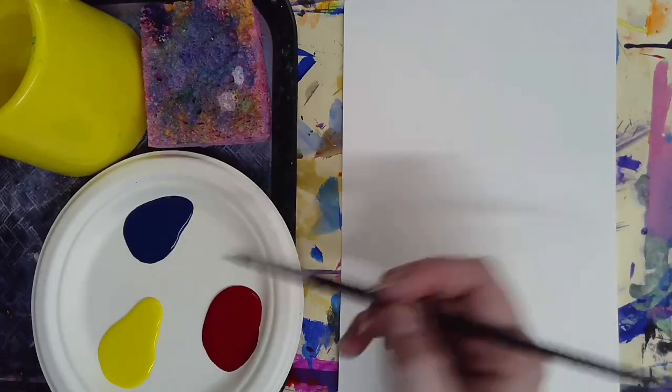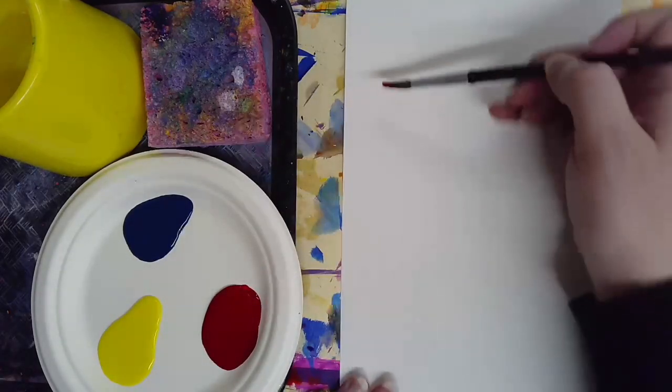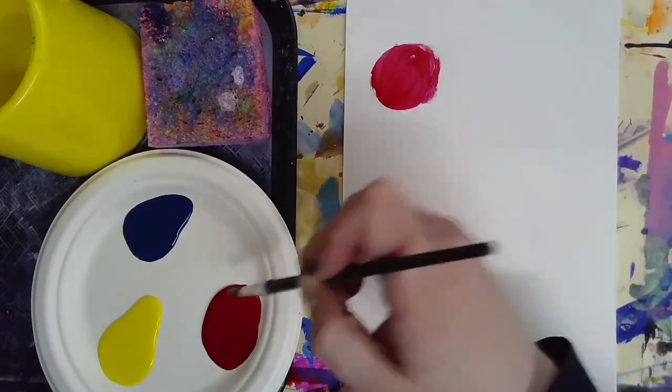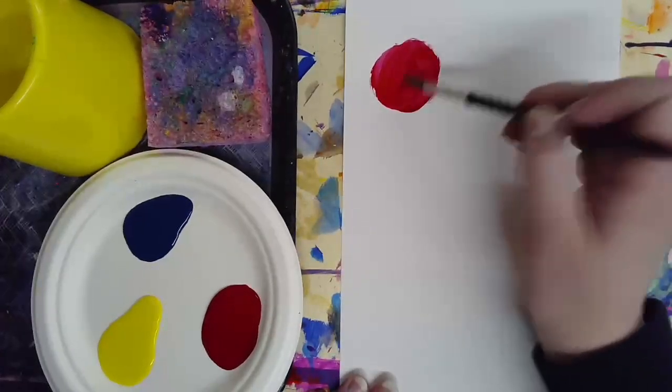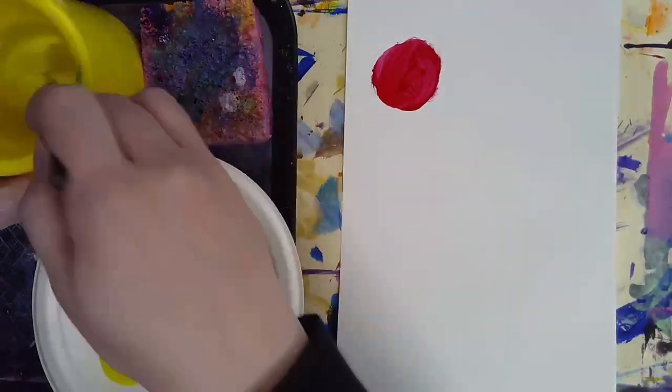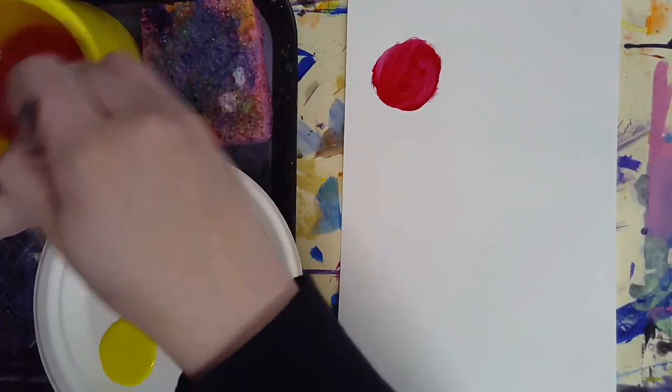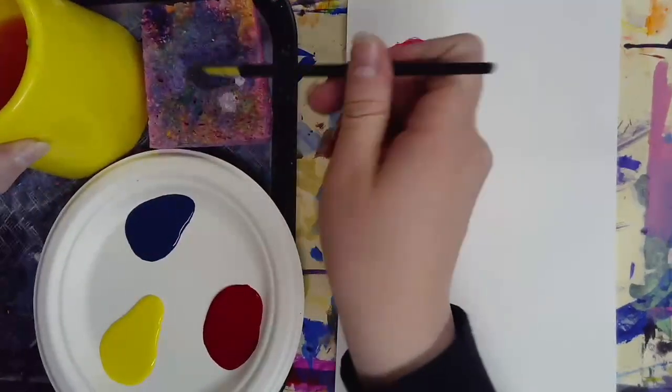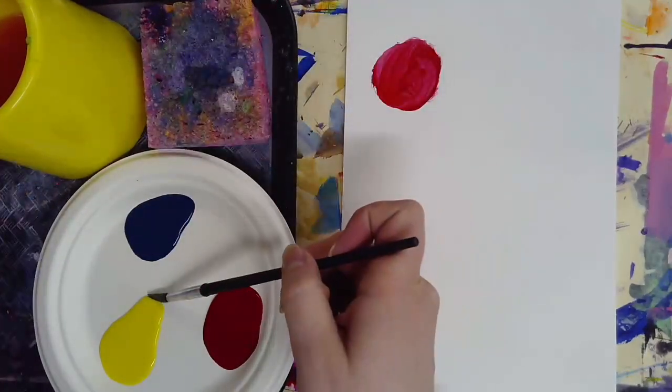I am going to use my paintbrush to pick up a little bit of this magenta and I'm gonna put it on my paper. Then I'm gonna go ahead and wash my brush really well in the water. Notice I am swirling it, I am wiping it on the bottom of the cup, and then I am drying it off.